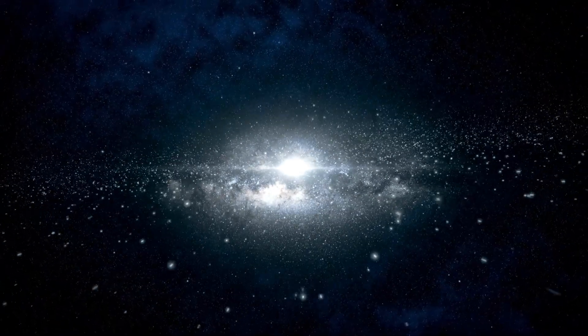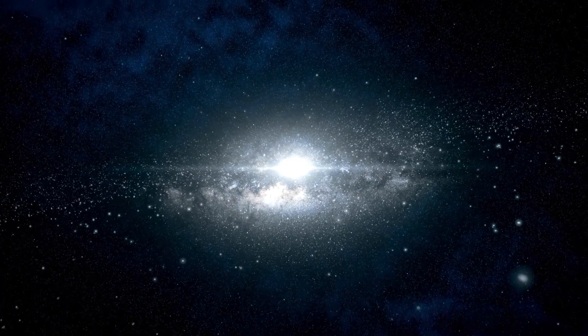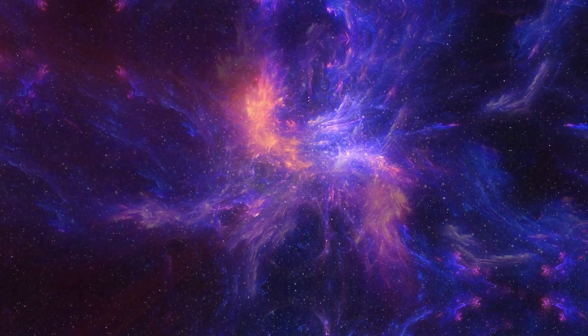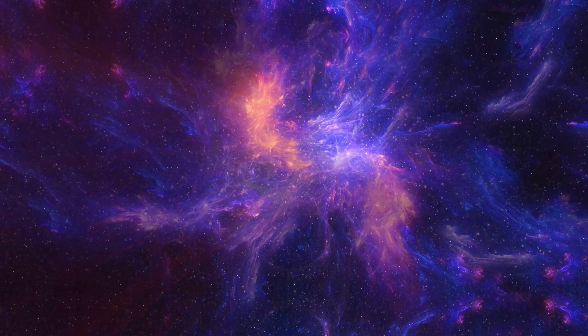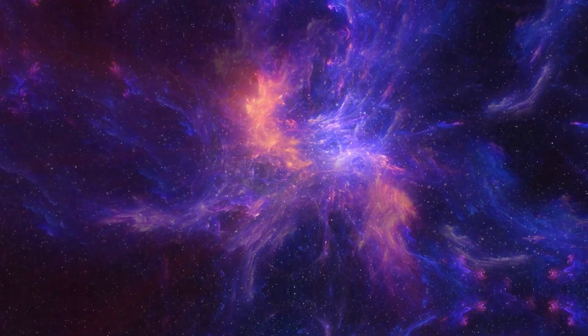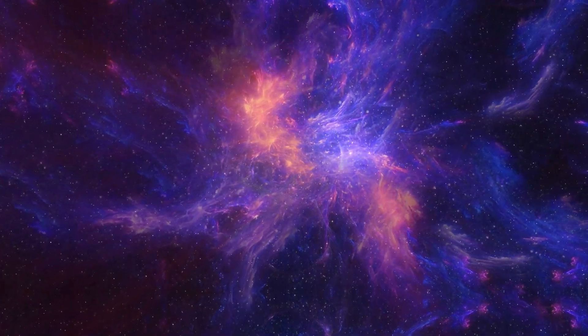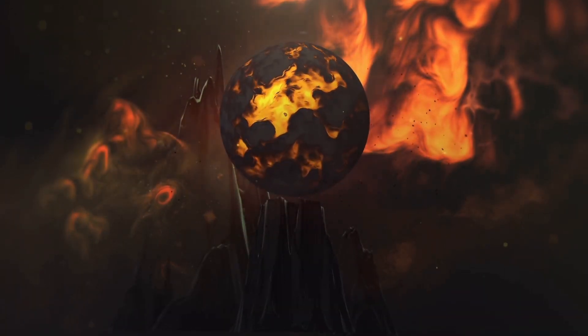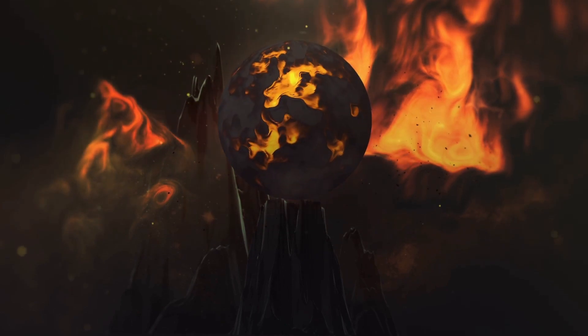Historically, supernovae have been rare for observers on Earth, but imagine a celestial explosion so intense that it rivals the brightness of a full moon, creating shadows on Earth at night and being visible during daylight. The radiation from such an event would charge our atmosphere, potentially affecting satellite operations and perhaps even the climate. Betelgeuse, with its unpredictable dimming patterns, suggests it could be preparing for just such a grand scene.